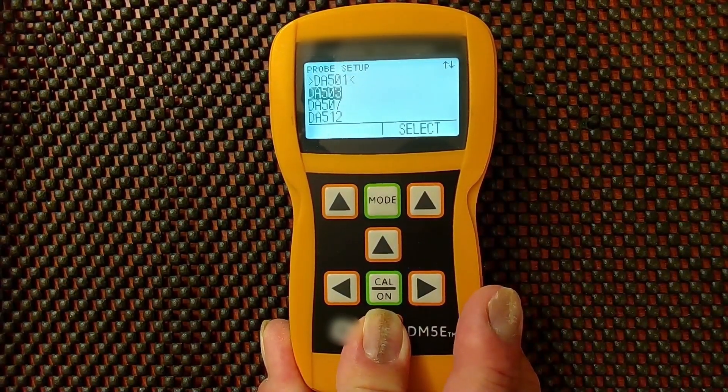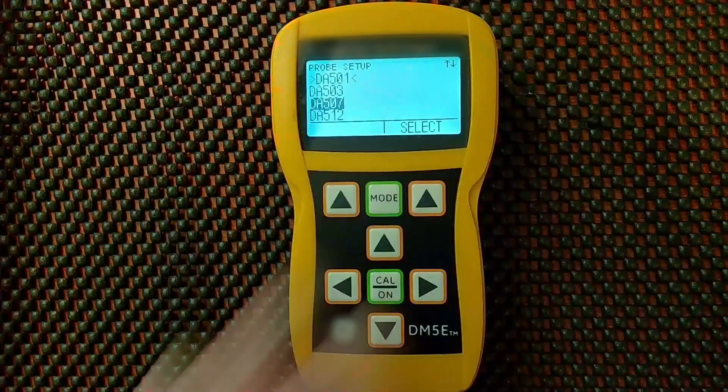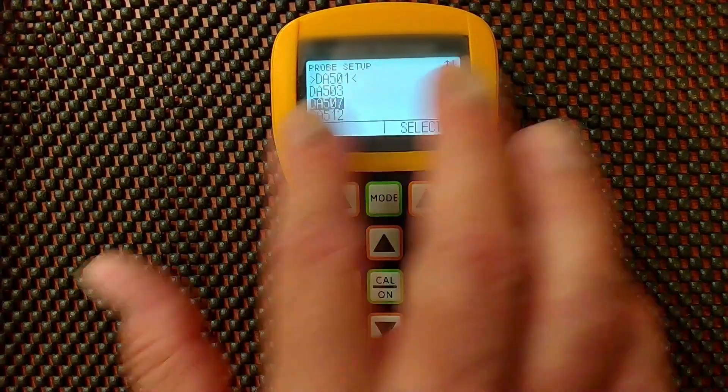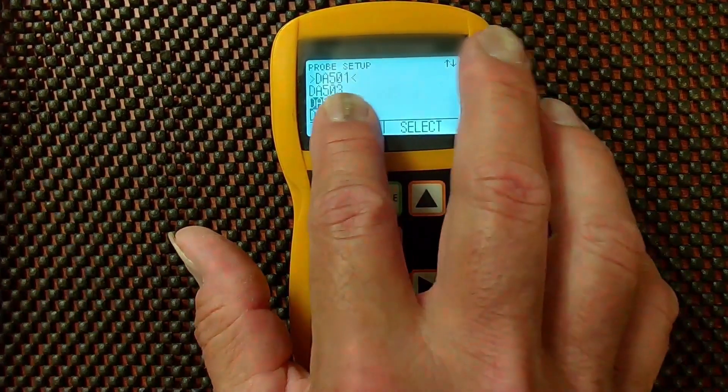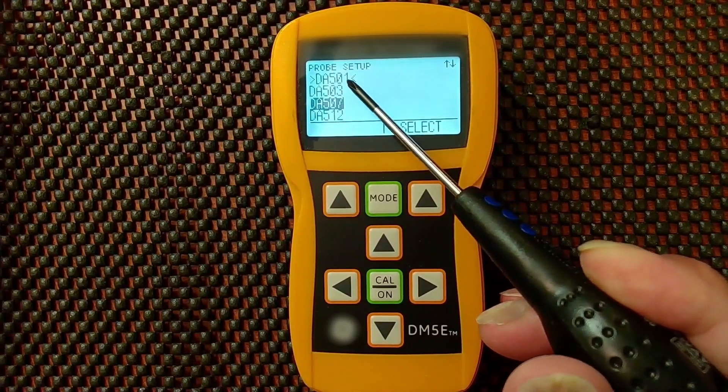These arrows just move up and down. If we were to move off of this menu now and come back, the DA501 is the selected probe. It's going to remain the selected probe. The selected probe is the one with the greater than and less than symbols around it.